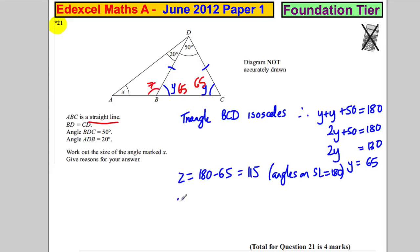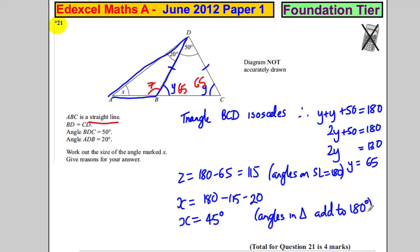Therefore, looking at this triangle, X must equal 180 minus 115 minus 20, which equals 45 degrees. The reason is angles in a triangle add to 180 degrees, and we're done.